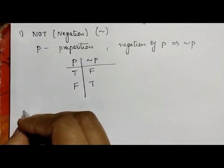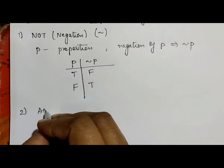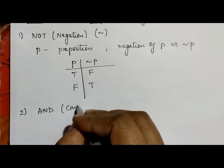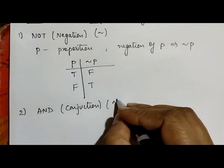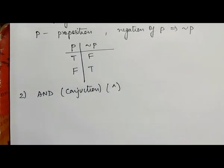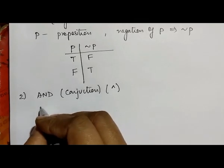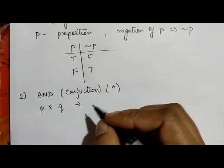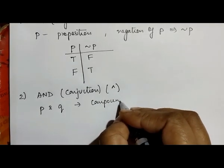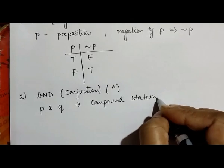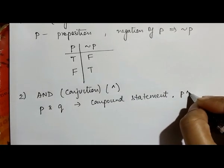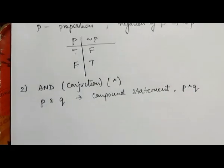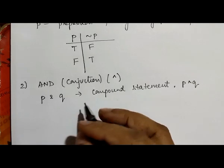The next connective is AND, which we call conjunction, and it is denoted by the conjunction symbol (∧). Suppose p and q are two compound statements — the conjunction of p and q is denoted as p ∧ q.